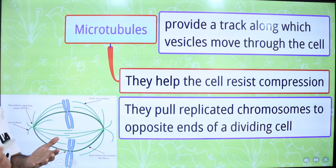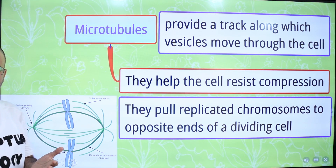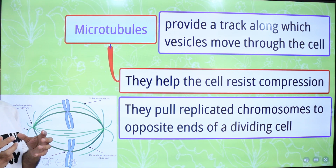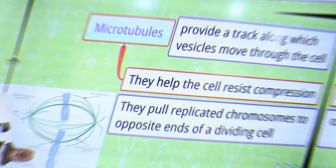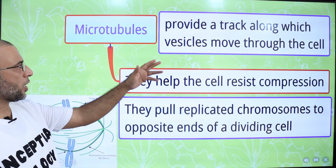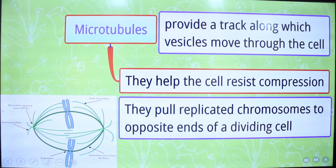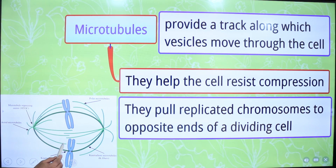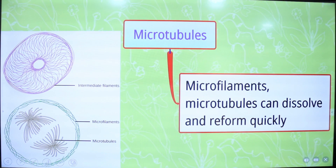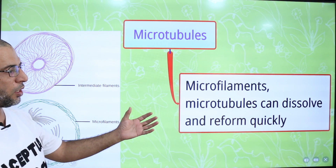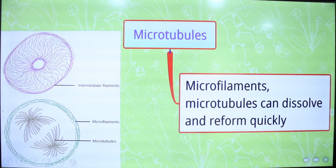In the Golgi complex, proteins are modified into glycoproteins or lipoproteins. The finished products from the Golgi complex are pinched off in transport vesicles, which again follow the track provided by microtubules. Microtubules also help in cell division — there are polar microtubules and kinetochore microtubules that help in the movement of chromosomes during cell division. Microtubules and microfilaments can dissolve and reform quickly, helping the cell to change its shape.